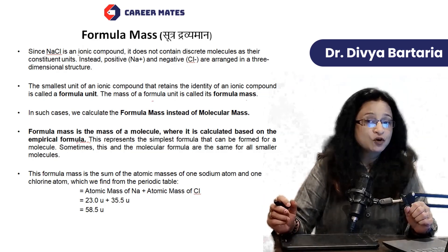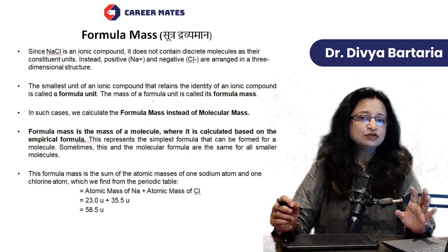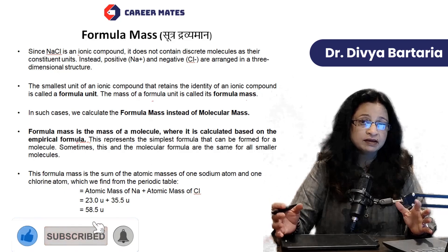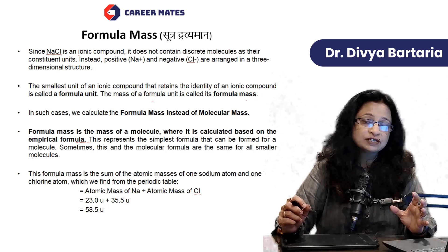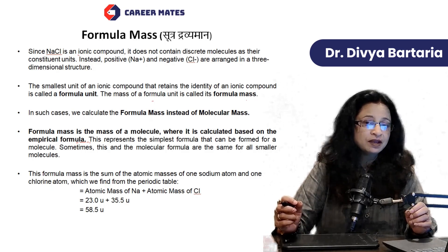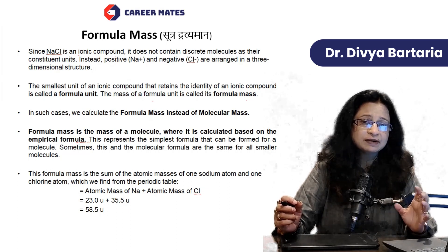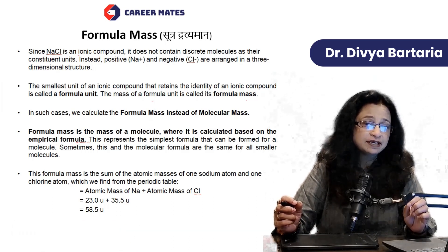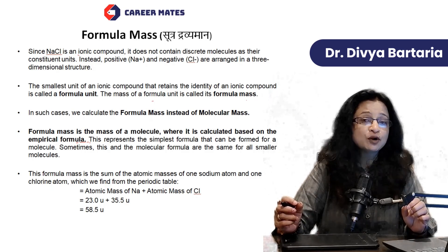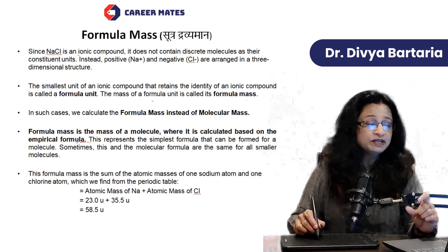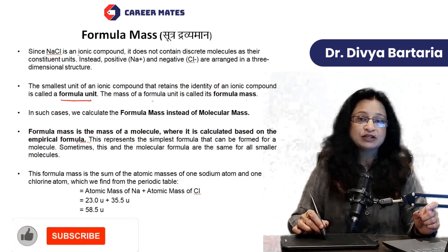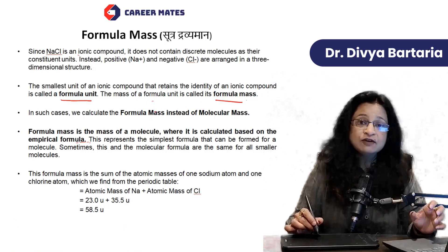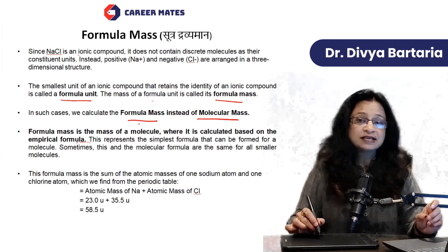Now let us consider formula mass. What is formula mass? Let us take an example of sodium chloride. In sodium chloride, there are discrete units of NaCl — NaCl ions in a three-dimensional orientation. In one sodium ion there can be 6 chloride ions, and in one chloride ion there can be 6 sodium ions. We can't tell the number of discrete molecular units, but the simplest unit we can identify is NaCl, so in this case we call it a formula unit. For ionic compounds, instead of molecular mass, we calculate formula mass.